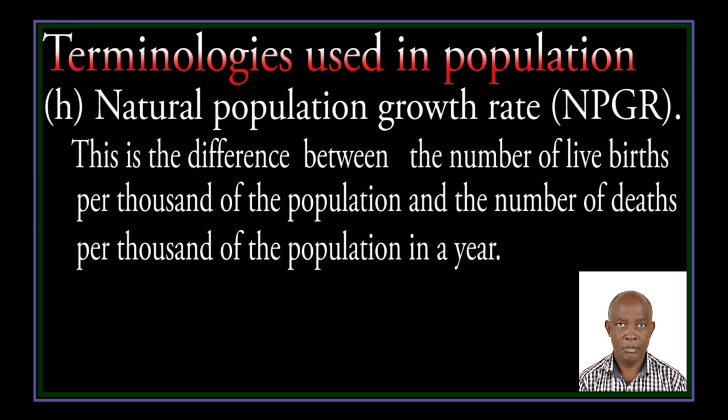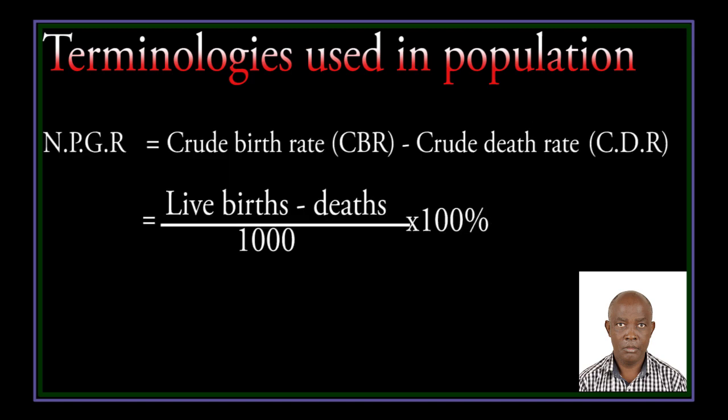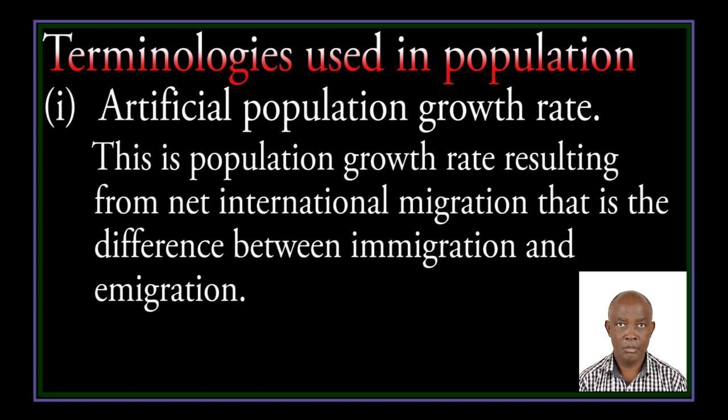Natural population growth rate (NPGR) is the difference between the number of live births per thousand of the population and the number of deaths per thousand of the population in a year. NPGR equals live births minus deaths, over one thousand, times 100%. Artificial population growth rate is the population growth rate resulting from net international migration — that is the difference between immigration and emigration.